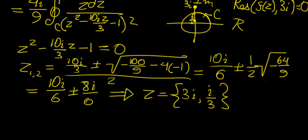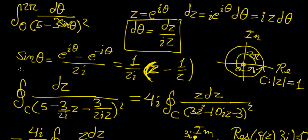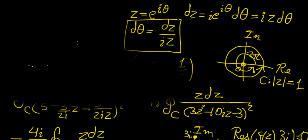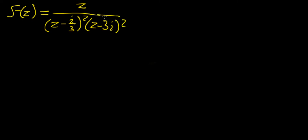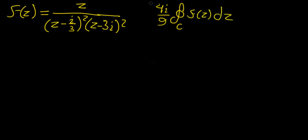We now proceed to find the residue at z = i/3. We express the denominator in terms of the roots: (z − i/3)² times (z − 3i)². So our integral has the form 4i/9 times the contour integral of f(z) dz, where f(z) = z over [(z − i/3)² (z − 3i)²].